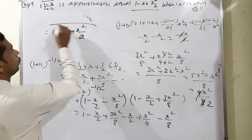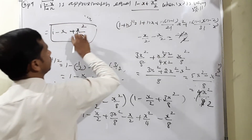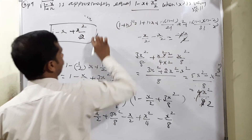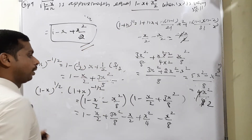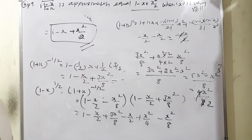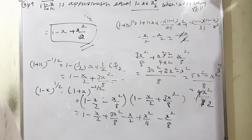Therefore the result is 1 − x + x²/2, which is exactly what we needed to prove. This is one of the important questions. Hence proved.